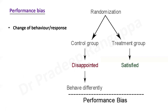Performance bias occurs when you have randomized into two groups — control and treatment — but the control group is aware they are in the placebo group. Their behavioral pattern changes, especially in questionnaire-based studies, because the type of response you get from a placebo group that is aware of its assignment will alter the findings. This is a change in behavior and response of patients. Performance bias is specifically seen in placebo-controlled trials where there is an intervention drug and a placebo.